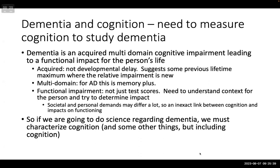The multi-domain part means it can't just be memory — it needs to be multiple different domains. The functional impairment part means this isn't something you can diagnose with test scores alone; you need to understand context for the person, their social demands, what they need to do in their life. There's an inexact link between cognition and impact on functioning. So if we're going to do any science regarding dementia, we really have to characterize cognition.